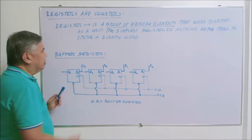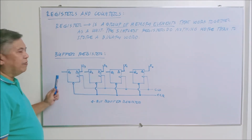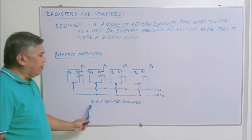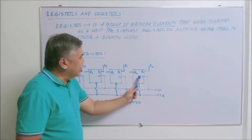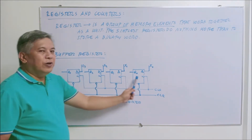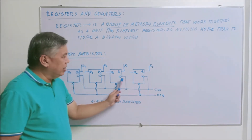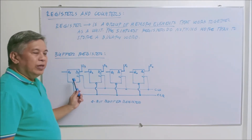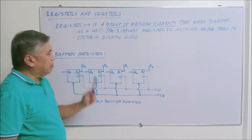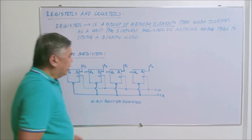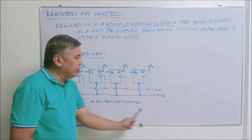What we have here is a buffer register — a 4-bit buffer register. If you notice, we are using D flip-flops here, 4 D flip-flops, with positive edge triggering of the clock. Each of the clock inputs of the flip-flops are interconnected together, and each of the clear inputs are also interconnected together.